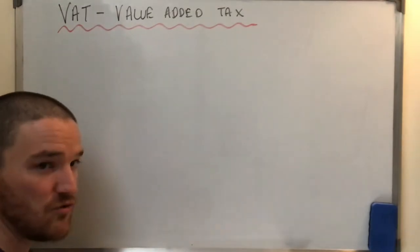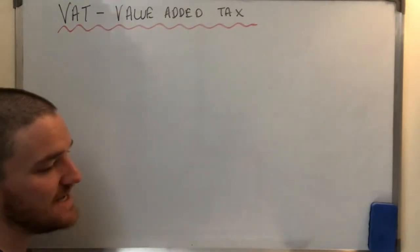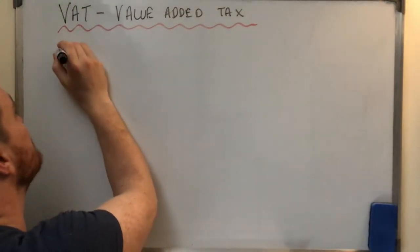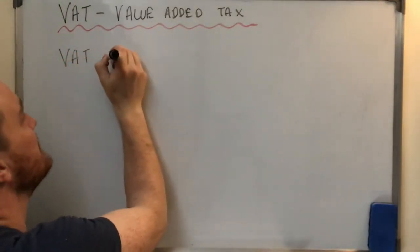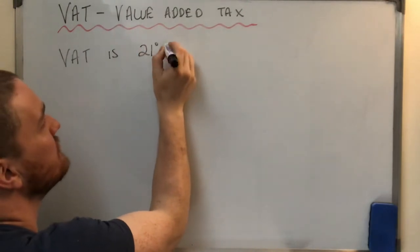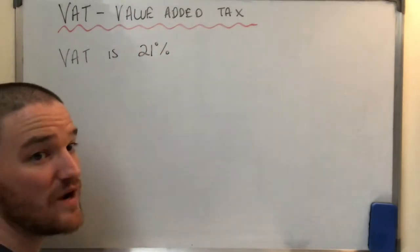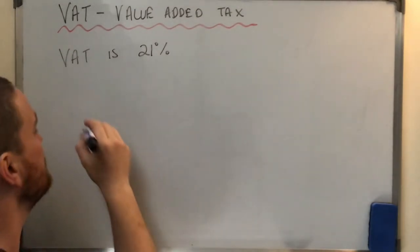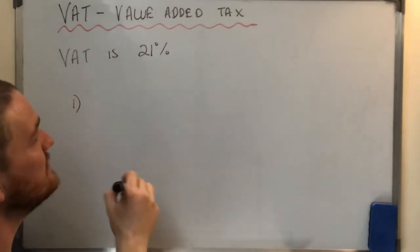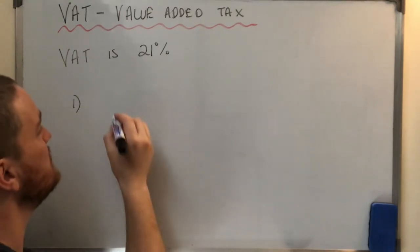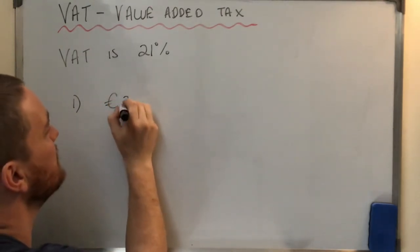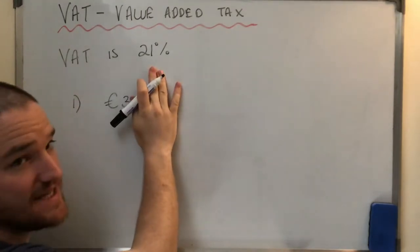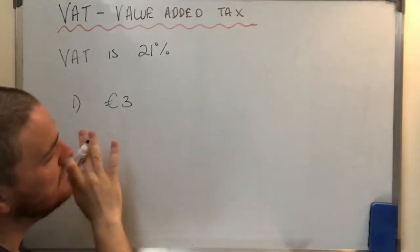So first let's just do the before because that's a bit easier. So let's say I have an item. Let's say VAT at the moment is 21%. Now that number can change, the government can change it, but let's just take it to be 21% for this question or for these following questions. So in the first one I'm going to buy a cup of coffee and the cup of coffee should be €3.